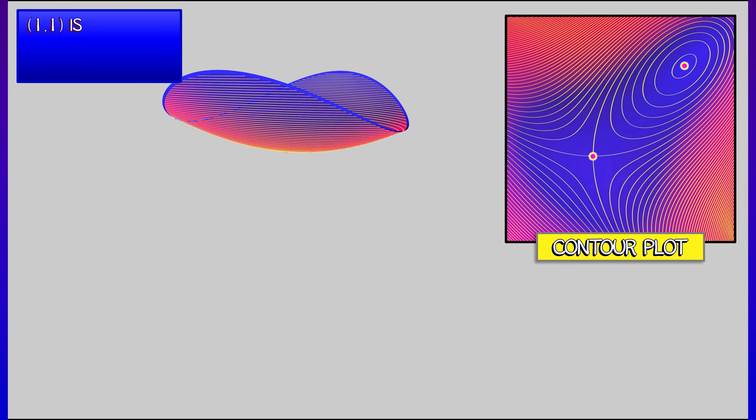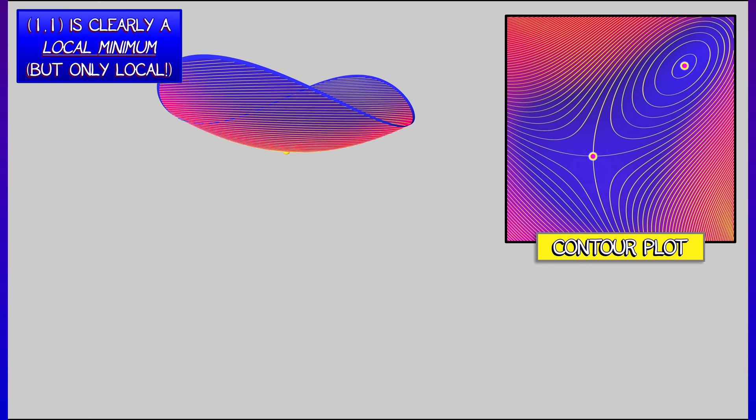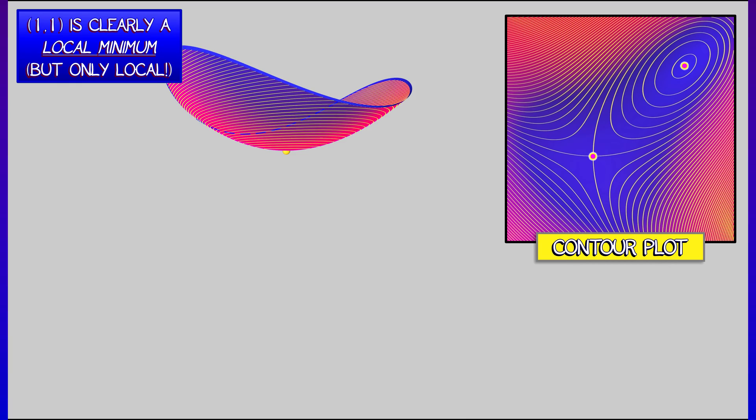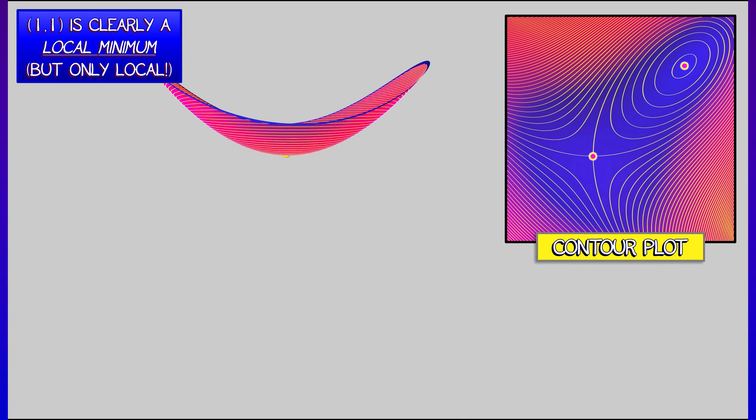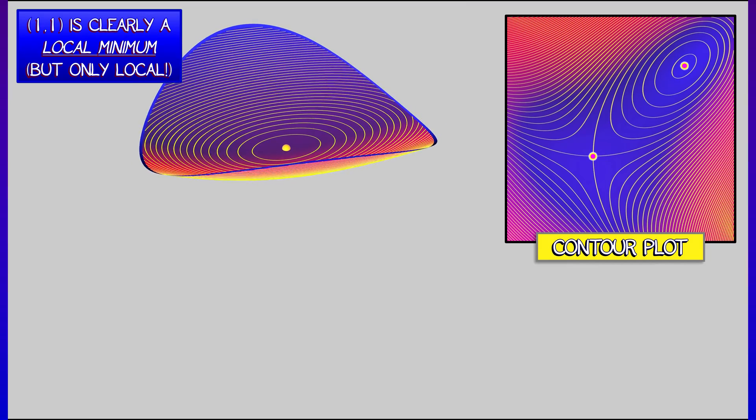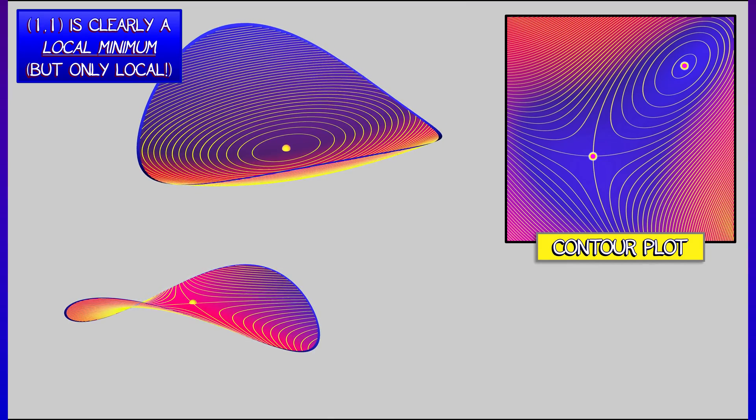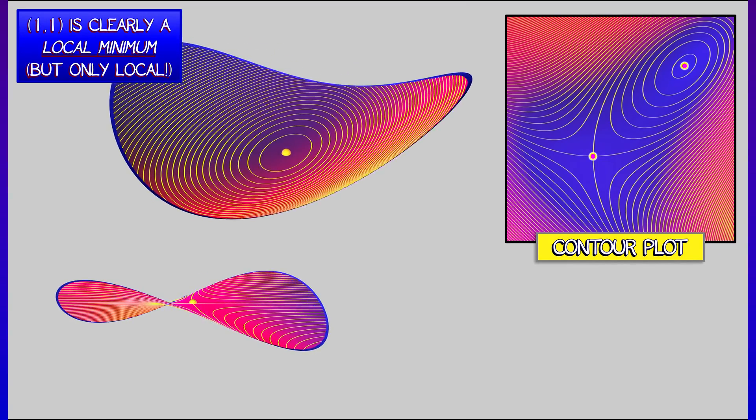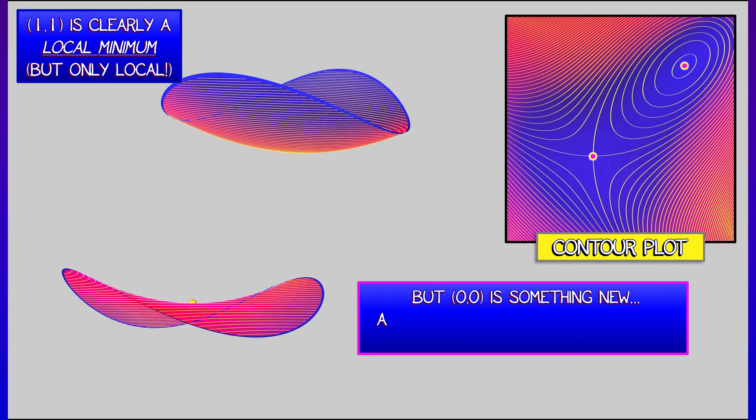And when we do so, then it's really obvious that the critical point at 1, 1 is a local min. But what about that other critical point? What is that? Is that a local min? Is it a local max? That other critical point is going to be something new, something that we have never seen before.